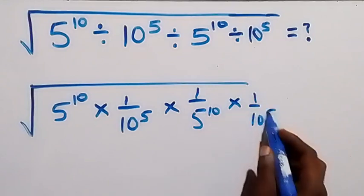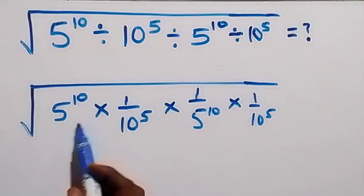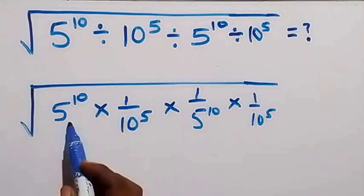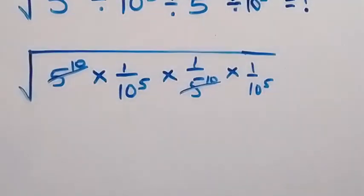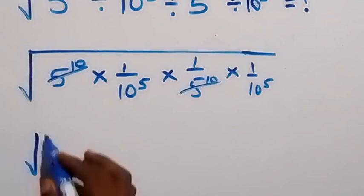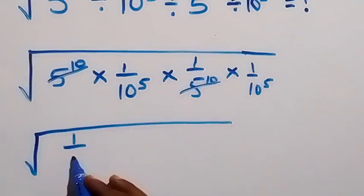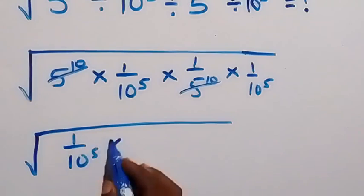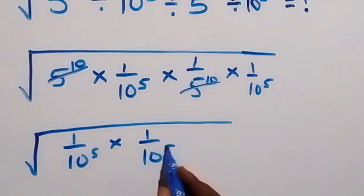Then also times 1 over 10 raised to power 5. From here, this 5 raised to power 10 — we cancel out the 5 raised to power 10 here. Then this will reduce to square root of 1 over 10 raised to power 5, then times 1 over 10 raised to power 5.